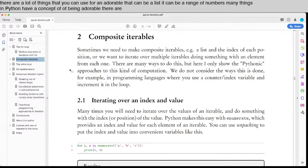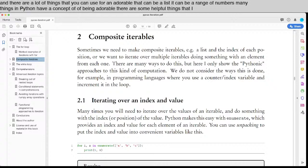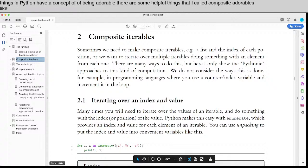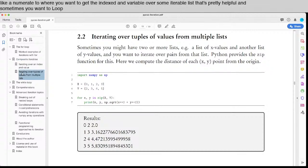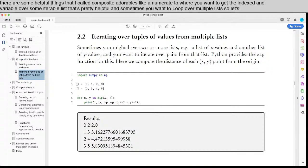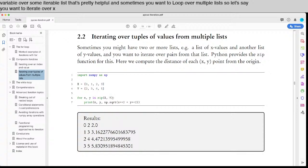There are some helpful things that I call composite iterables, like enumerate, where you want to get the index and a variable over some iterable list. That's pretty helpful. And sometimes you want to loop over multiple lists, so let's say you want to iterate over x and y, then zip is the thing that will work for you there. So you can get 0 and 2, 1 and 3, 2 and 4, and so forth.